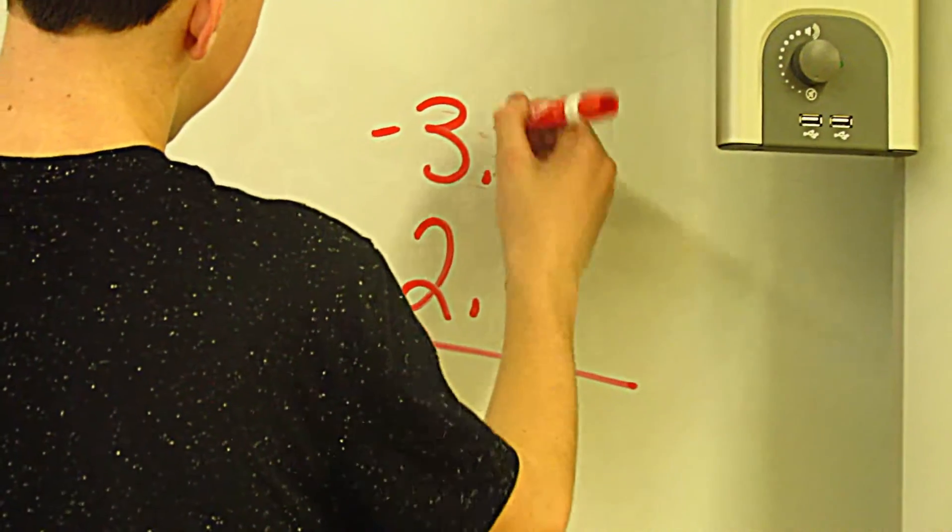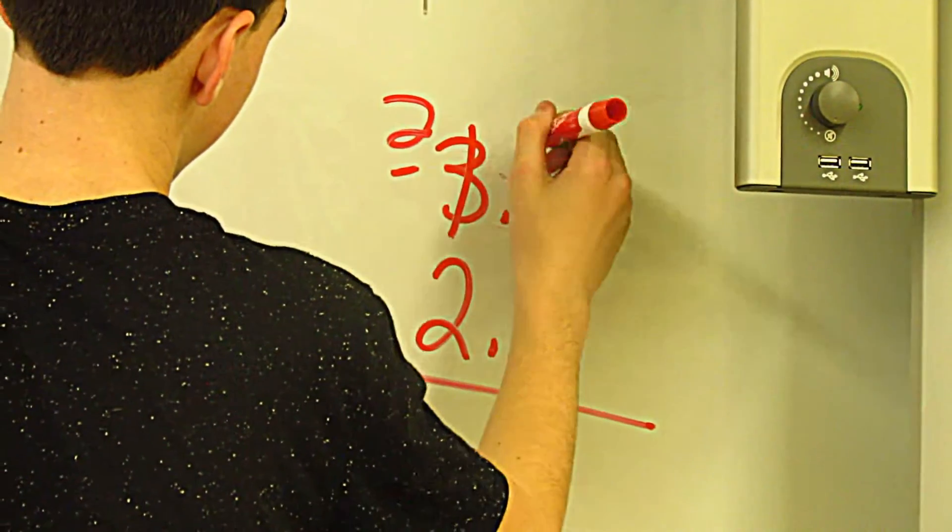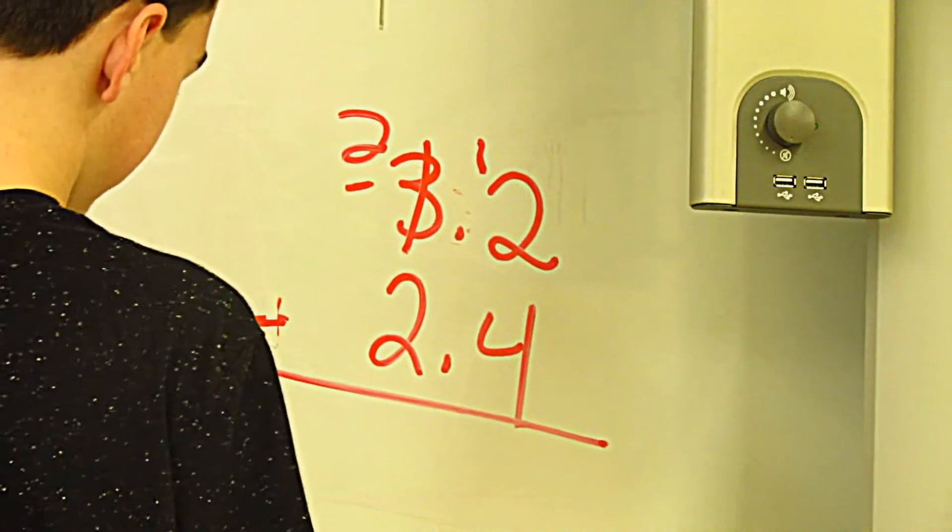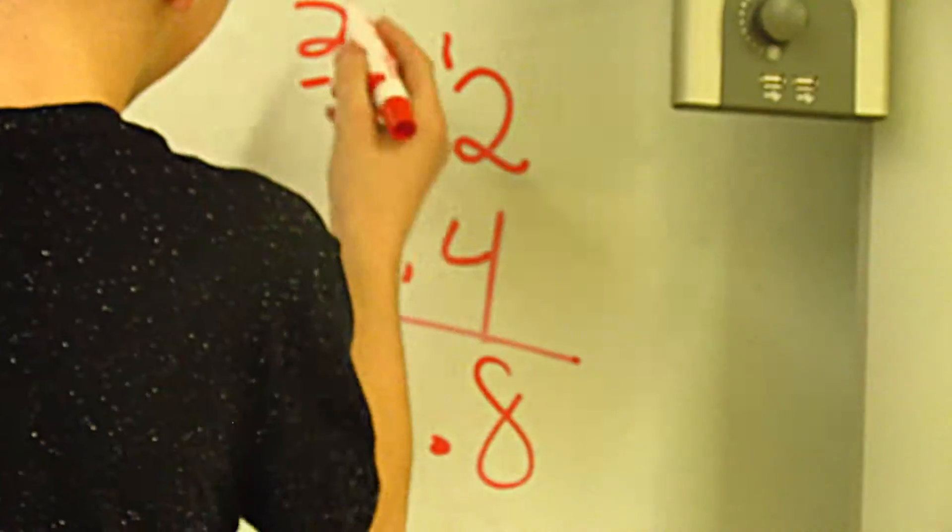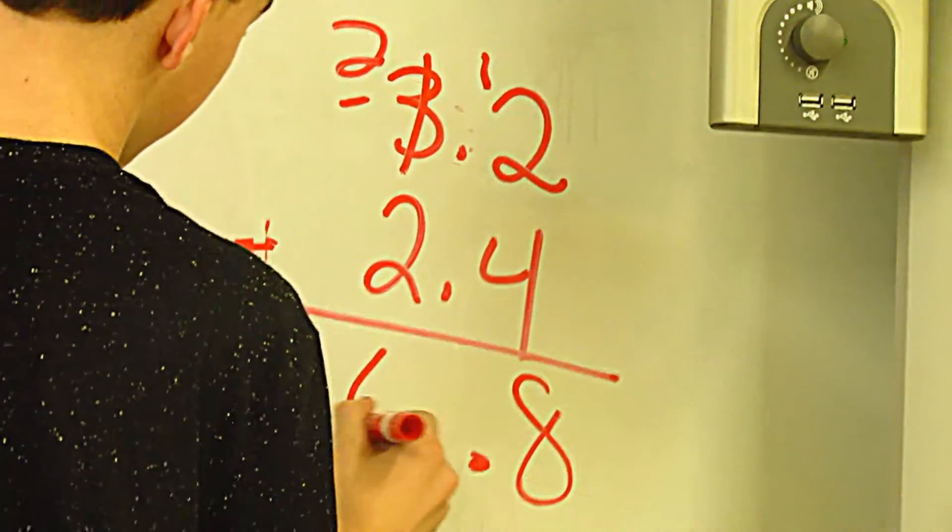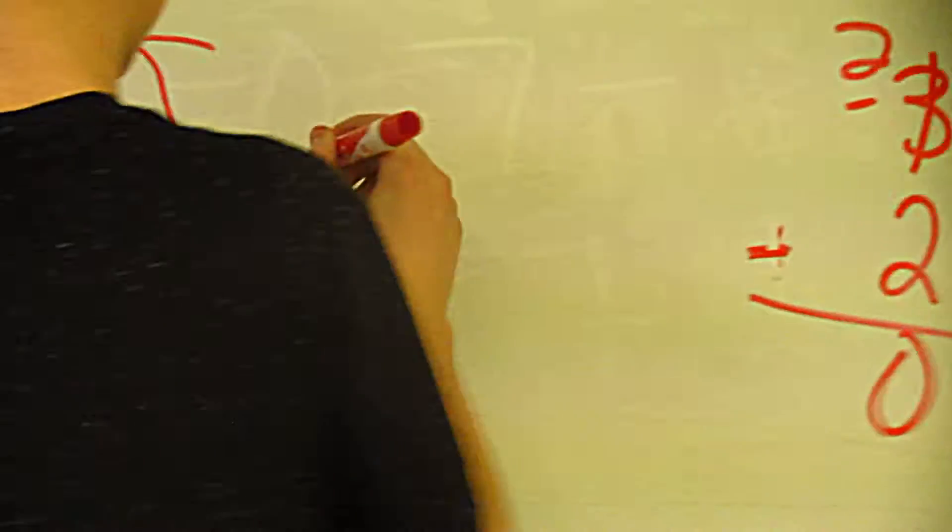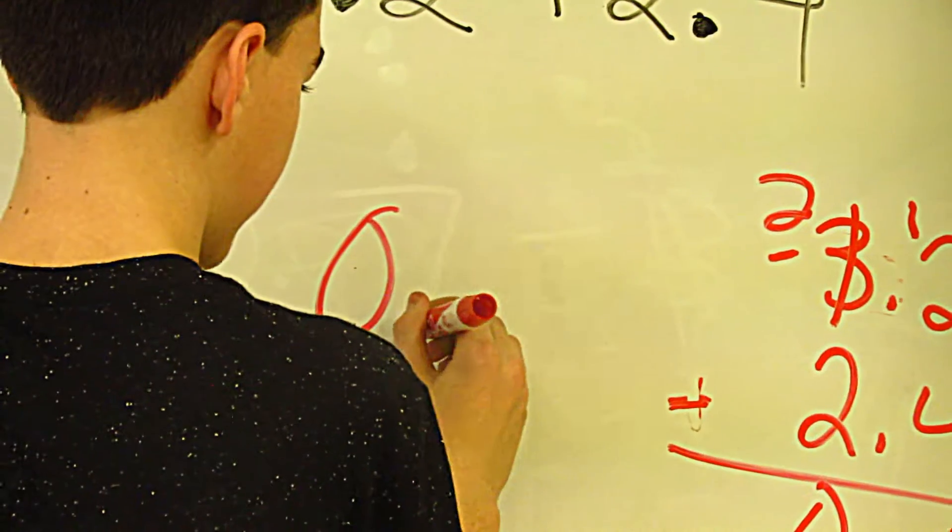This turns into a 2, this turns into a 12. After you do that, you get 8, bring down the decimal, and 2 minus 2 is 0, so it's minus 0.8.